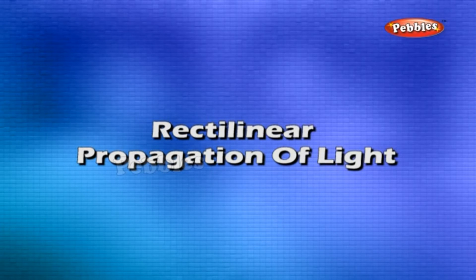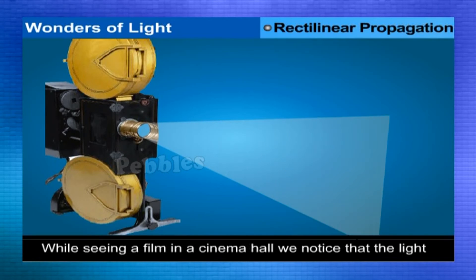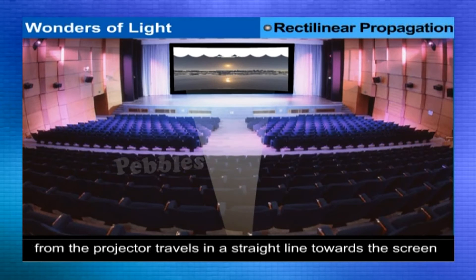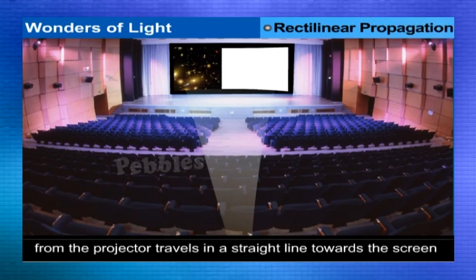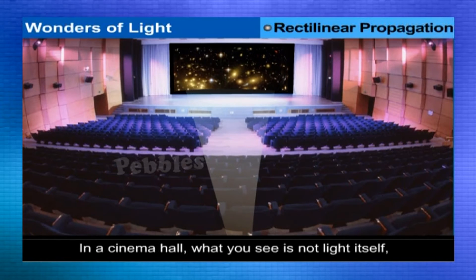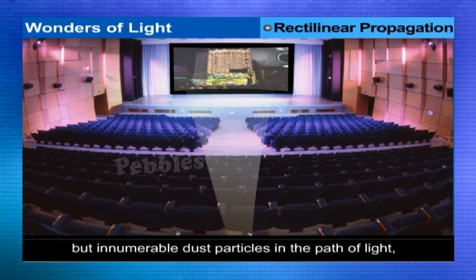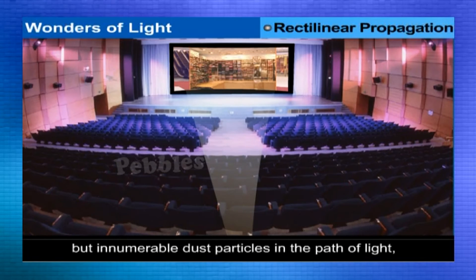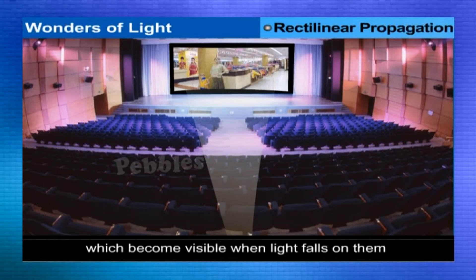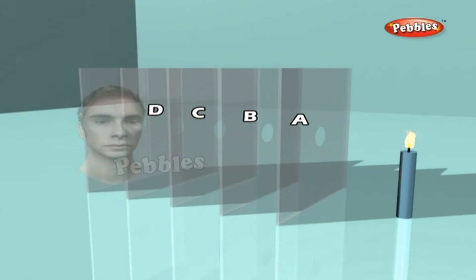Rectilinear propagation of light: While seeing a film in a cinema hall, you may have noticed that the light from the projector appears to go in a straight line towards the screen. What you see is not light itself, but innumerable dust particles in the path of light which become visible when light falls on them. This shows that light travels in straight lines — a phenomenon called the rectilinear propagation of light.